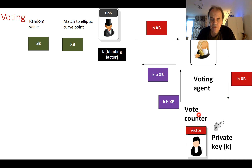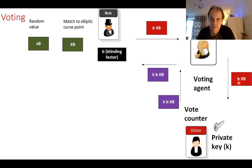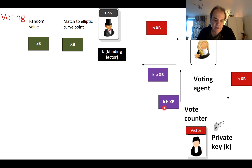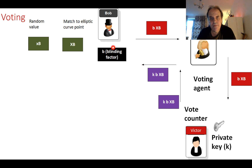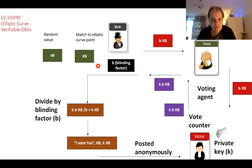The voting agent sends each registered value — b times X_b for Bob, and corresponding values for Alice and Carol — to the vote counter Victor. Victor sends back to Trent the value k (his private key) multiplied by the received value, giving k times b times X_b, all done mod p. Trent then sends this value back to Bob, Alice, and Carol, each keeping their respective result.